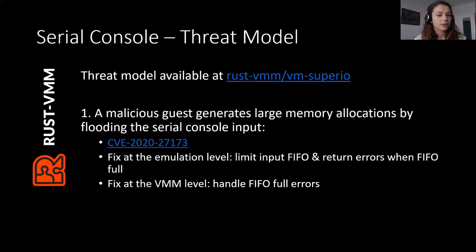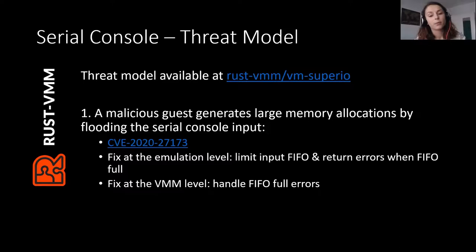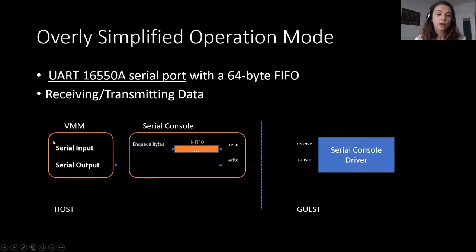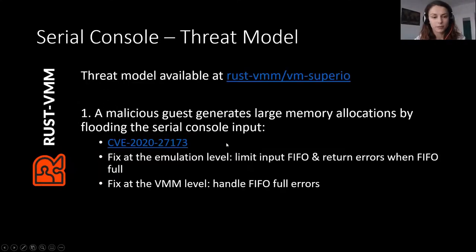You might already think about a few problems with this implementation. Before I start, I want to let you know that this threat model is already available in RustVMM/vm-superio on GitHub, and these threats are already fixed. The first problem is that a malicious guest could generate large memory allocation by flooding the serial input — this already has a CVE allocated. The problem was that we did not have a limit on the input FIFO, so it could grow unlimited. The fix was relatively straightforward: we limited the input FIFO and return an error whenever the FIFO is full.